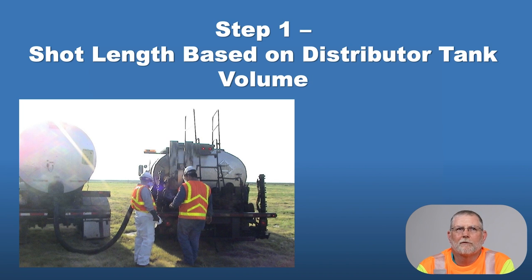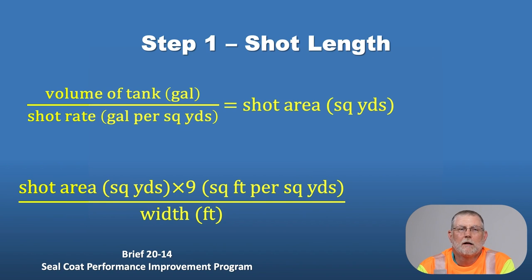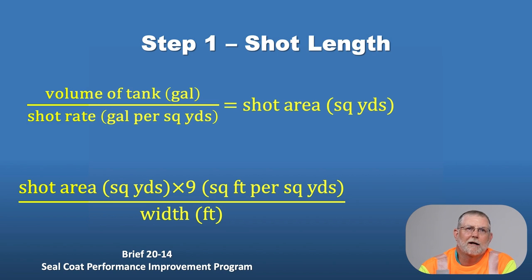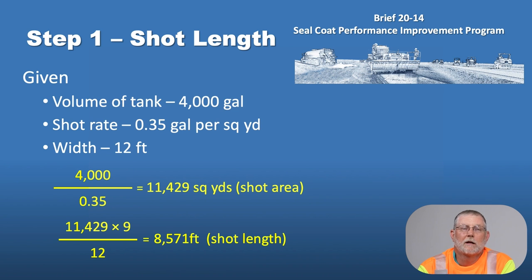Getting into step one — shot length based on distributor tank volume — here is how we do that. We take the volume of the tank in gallons and divide that by the shot rate in gallons per square yard, giving us a shot area in square yards. We then multiply that by nine to convert to square feet, and divide by the width of the shot to get the length. In our example, the distributor tank volume is 4,000 gallons, the shot rate is 0.35 gallons per square yard, and the width of the lane is 12 feet.